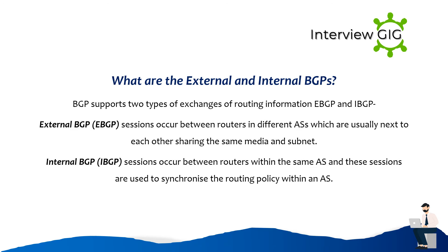What are external and internal BGPs? BGP supports two types of routing information exchange: eBGP and iBGP. External BGP sessions occur between routers in different ASes, which are usually next to each other sharing the same media and subnet. Internal BGP sessions occur between routers within the same AS, and these sessions are used to synchronize the routing policy within a NAS.